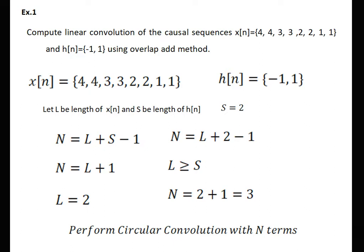The number of terms in the convolution are the length of x plus length of h minus 1. Therefore, N is equal to L plus S minus 1. Since S is 2, the equation becomes N is equal to L plus 1. To perform convolution using the overlap add method, L should be greater than or equal to S. We take the value of L equal to S, so L equals 2, though L can be taken greater than 2 as well. With L equal to 2, the equation becomes N equal to 2 plus 1, which equals 3.